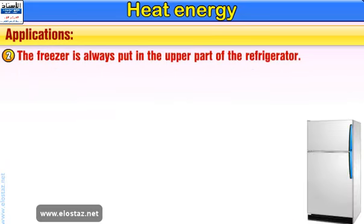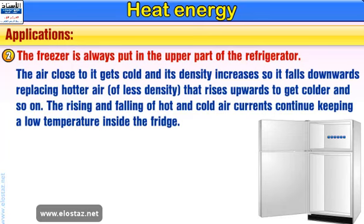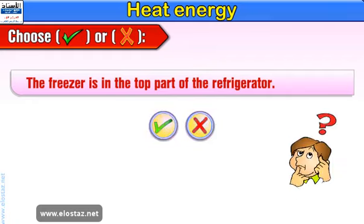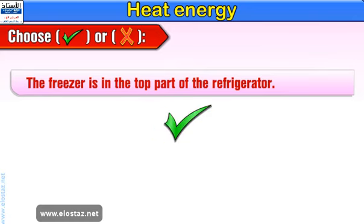Application 2: The freezer is always put in the upper part of the refrigerator. The air close to it gets cold and its density increases, so it falls downwards, replacing hotter air of less density that rises upwards to get colder, and so on. The rising and falling of hot and cold air currents continue, keeping a low temperature inside the fridge. Choose true or false: The freezer is in the top part of the refrigerator. Well done — It's true.